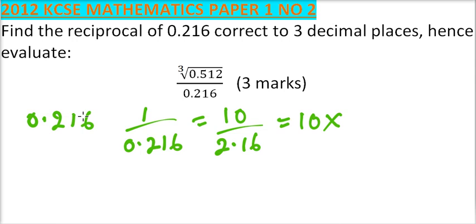From the reciprocal table, you can get the reciprocal of 2.16, which is 0.4630. So when you multiply by 10, you get this is 4.630.